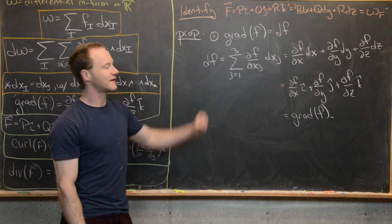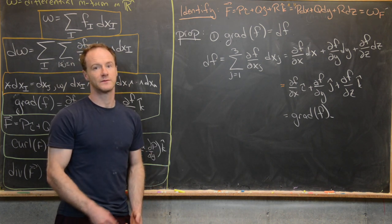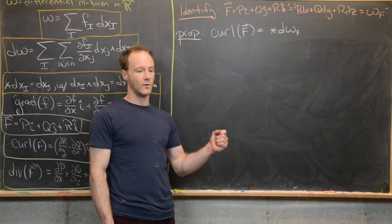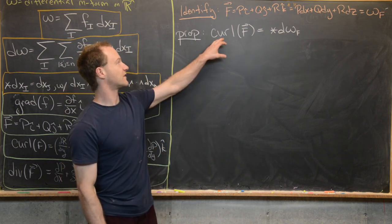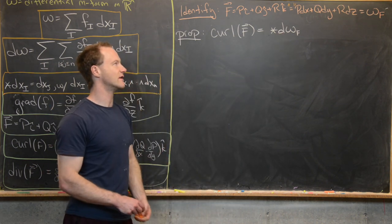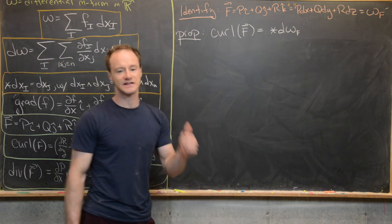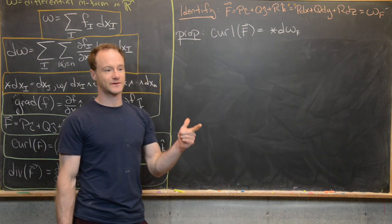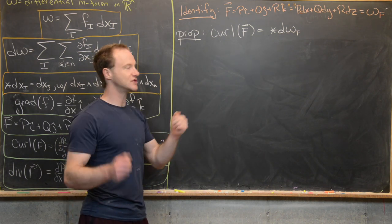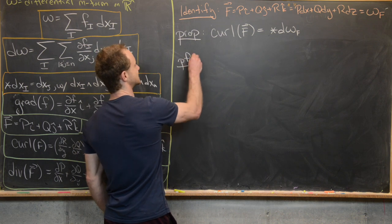Now moving on to the relationship between the curl of a vector field, the exterior derivative of a one-form, and the Hodge operator. We'll see that curl F = ★(d ω_F). So ω_F is a differential one-form, d turns it into a differential two-form, the Hodge operator turns it back into a differential one-form, and at each stage we can identify the differential one-form with a vector field.